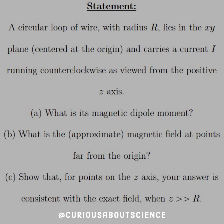What is the magnetic dipole moment? b. What is the approximate magnetic field at points far from the origin? c. Show that for points on the z-axis, your answer is consistent with the exact field when z is much, much greater than r.